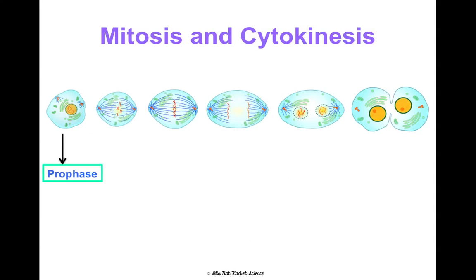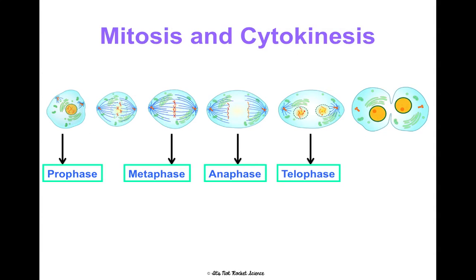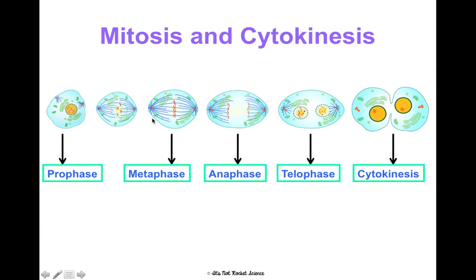We'll go through prophase, metaphase, anaphase, telophase, and then cytokinesis at the end. They used to call this back in the day pro-metaphase — this intermediate phase between prophase and metaphase — but now a lot of people don't distinguish it as its own step. Remember this is a cycle, so these all kind of flow into each other; they're not necessarily discrete steps. So don't really worry about pro-metaphase.